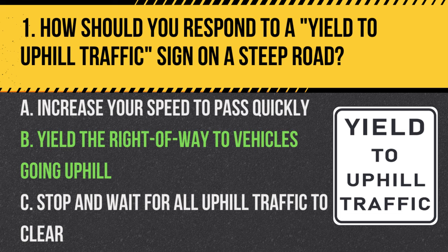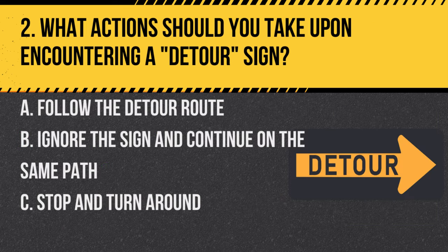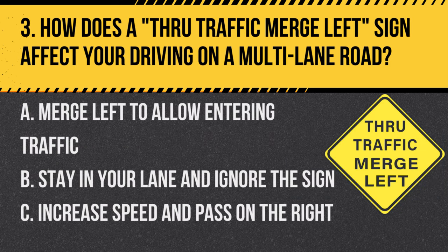Question 2. What actions should you take upon encountering a detour sign? A. Follow the detour route. B. Ignore the sign and continue on the same path. C. Stop and turn around. Answer: A. Follow the detour route. A detour sign indicates that the usual route is unavailable and drivers should follow the alternative path provided.